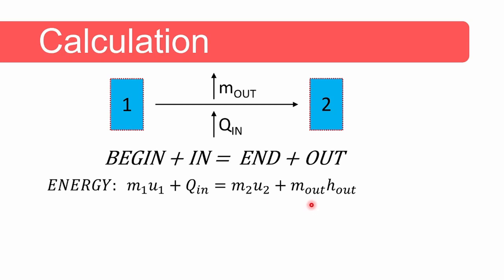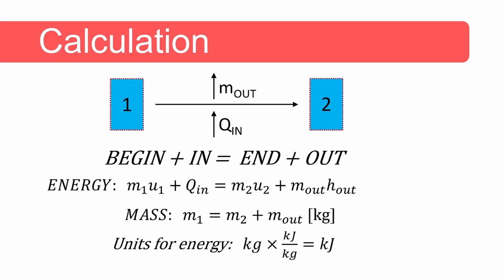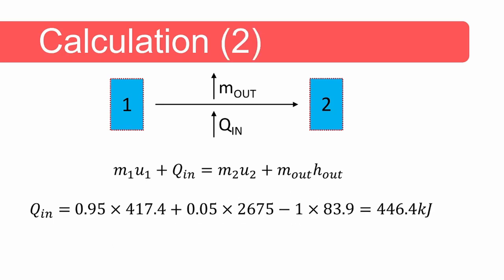We calculate m_out using mass conservation: M1 equals M2 plus m_out. The enthalpy out is that of saturated steam at 100 kilopascals. Note that the units are kilograms times kilojoules per kilogram, which equals kilojoules. We can then rearrange the equation to solve for Q.